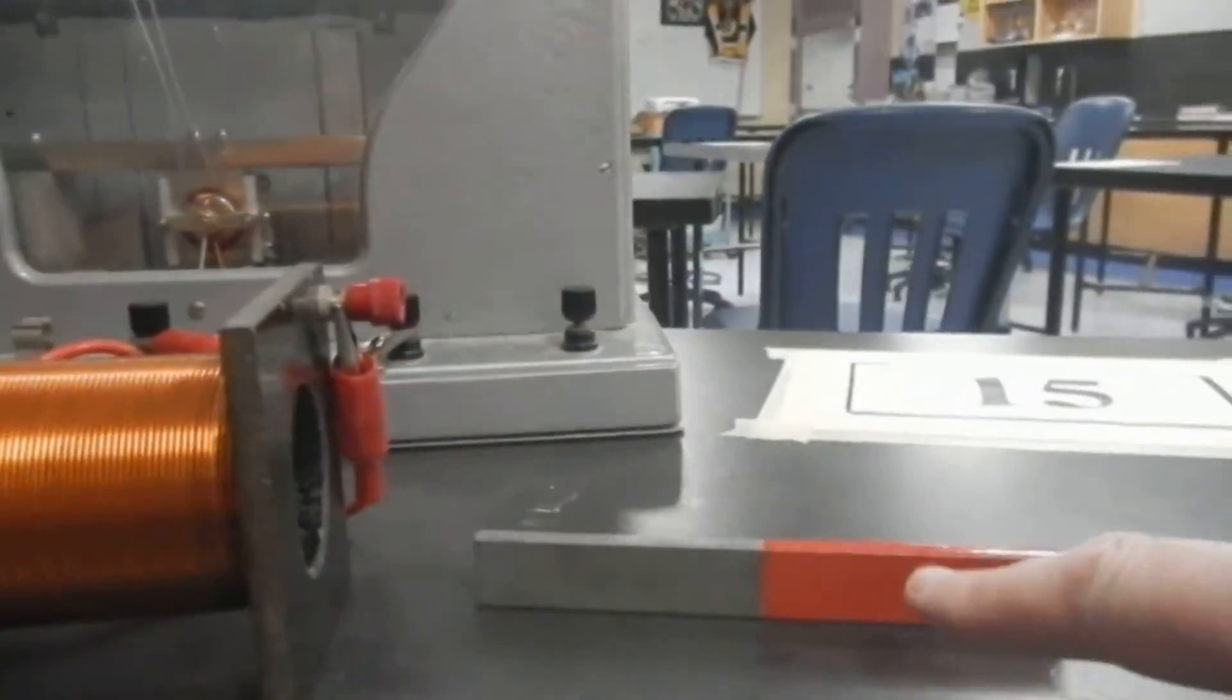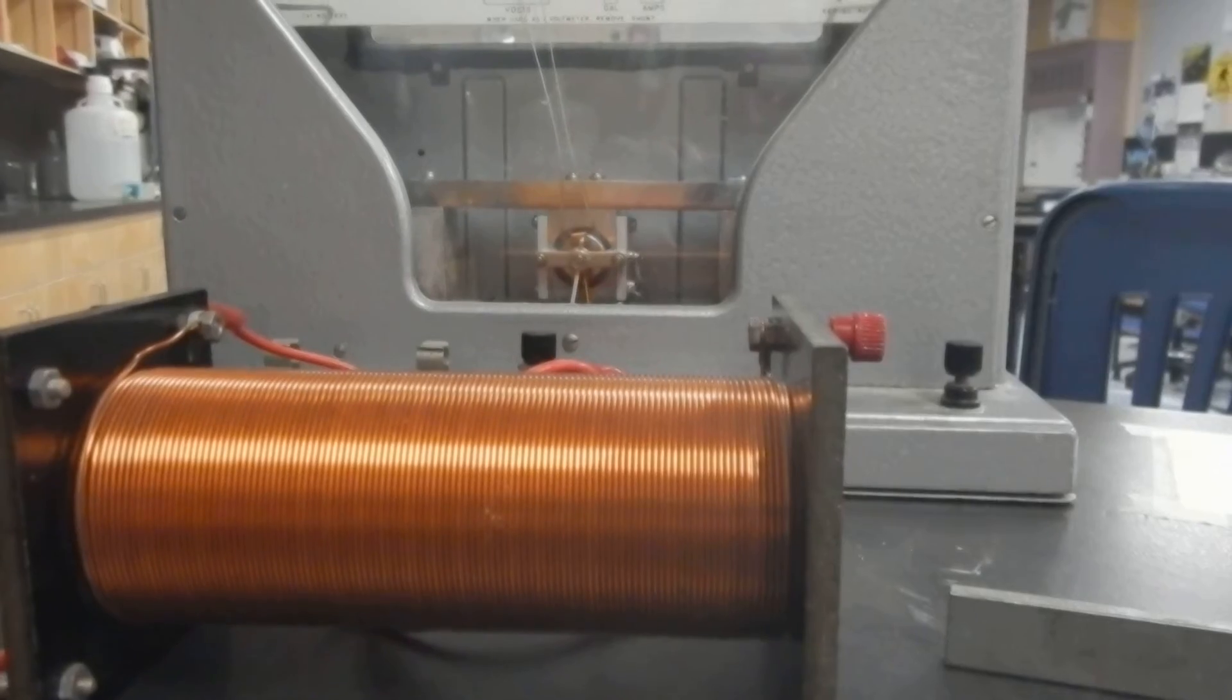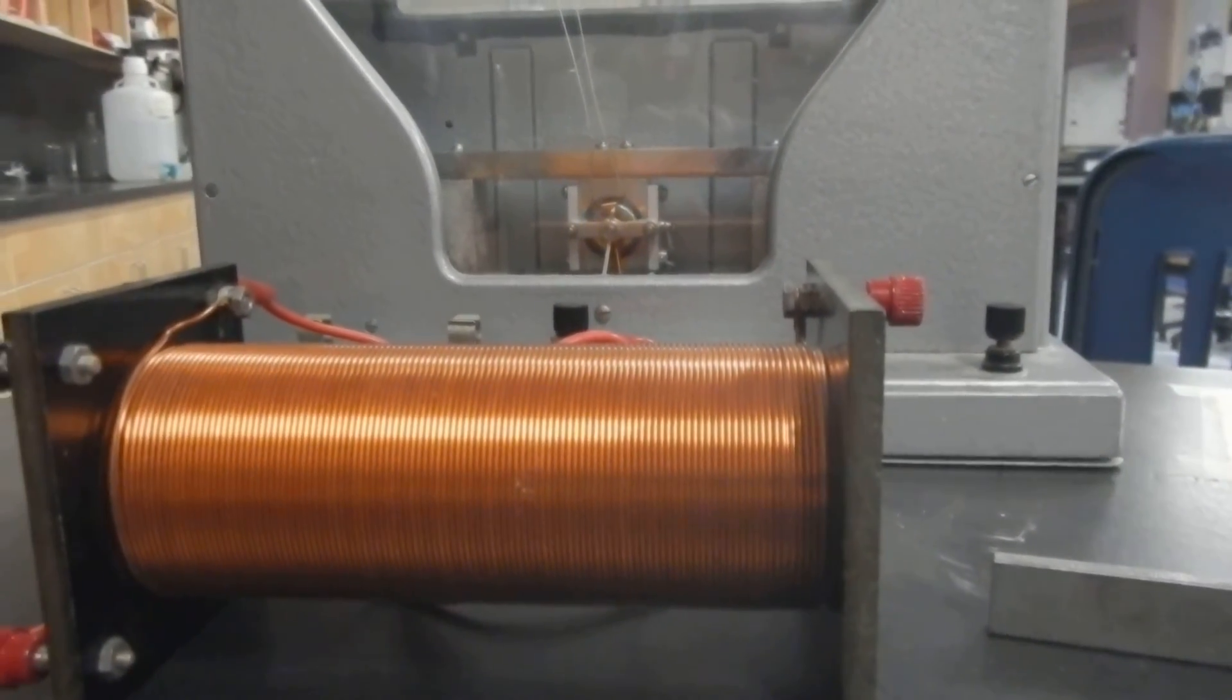Our next demo, we're going to spin a magnet near this and see what we get. And then we'll try a toy motor. We know we can take electricity and make magnetism. Now we're taking magnetism and trying to make electricity.